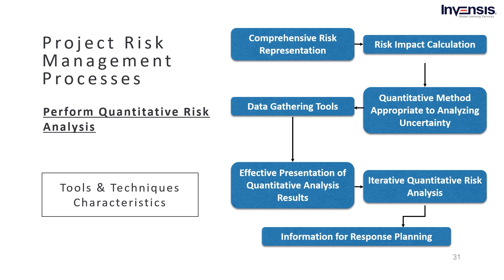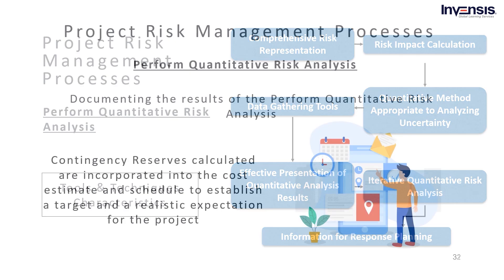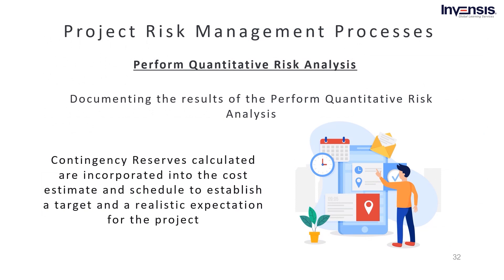If the overall risk to time and cost indicates that a scope adjustment is needed, the scope changes are agreed upon and documented, and a new quantitative risk analysis is carried out to reflect the new aspects of the project. The contingency reserves calculated are incorporated into the cost estimate and schedule to establish a target and realistic project expectations. Contingency reserves may also be established to capture opportunities judged to be priorities for the project. The analysis results may provide more or less urgency to risk response depending on the probability of achieving the plan's objectives or the amount of contingency reserve required. Finally, the quantitative risk analysis results are recorded and passed to the people responsible for managing the project for any further actions required.